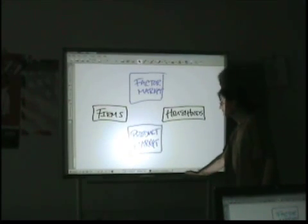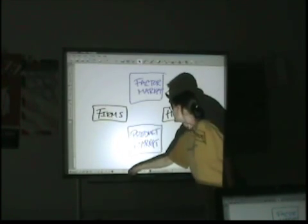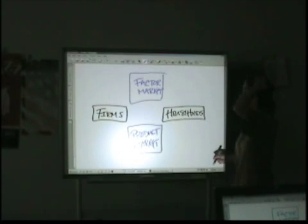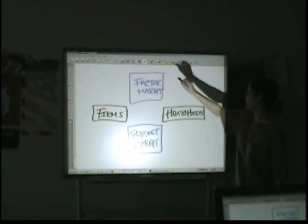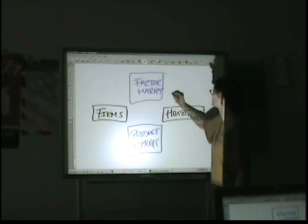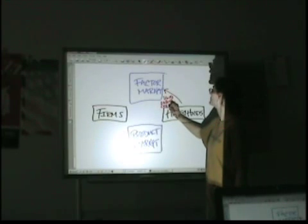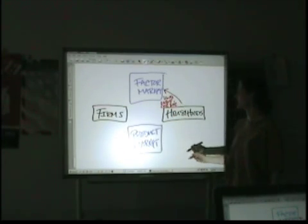Now let's look at the movement of stuff first. The stuff is going to go counterclockwise. What do households provide to the factor market? They're going to provide all the resources: land, labor, capital, entrepreneurship. Or you could just say resources because that's what it is.